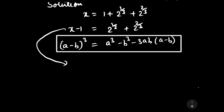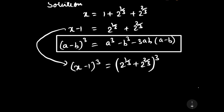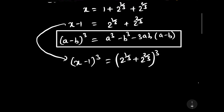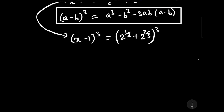Cubing both sides: (x minus 1) whole cube is equal to (2 to the power 1/3 plus 2 to the power 2/3) cubed. With the help of the (a plus b) whole cube identity, we will further open it.